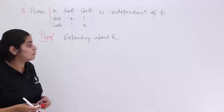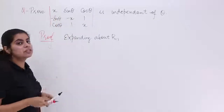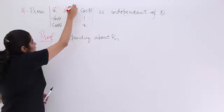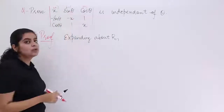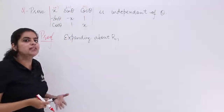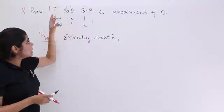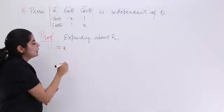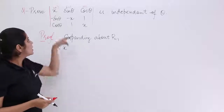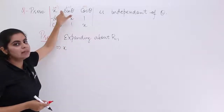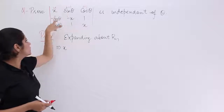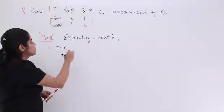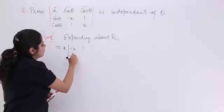The answer will remain the same. The first element is x, which will be plus. Next will be minus, and then plus. Now x is multiplied by a sub-determinant obtained by eliminating the first row and first column. So it is x multiplied by the sub-determinant: minus x, 1, 1, x.